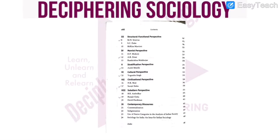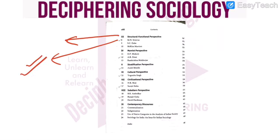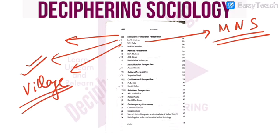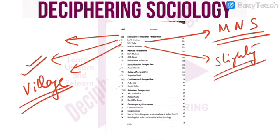Now on the second page of the contents, we have the structural functional perspective. M.N. Srinivas has explicitly been mentioned in the syllabus — he is a very important thinker. S.C. Dube in the village study is also important. Mackey Marriott — a few points you should know about this thinker. Then in the Marxist perspective, A.R. Desai is important.